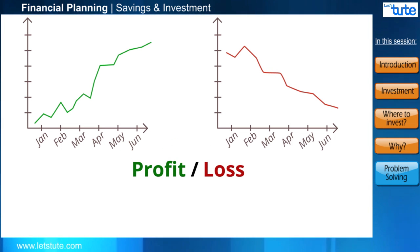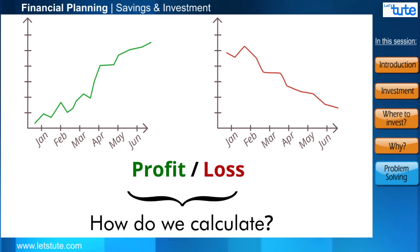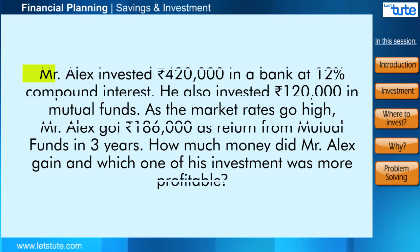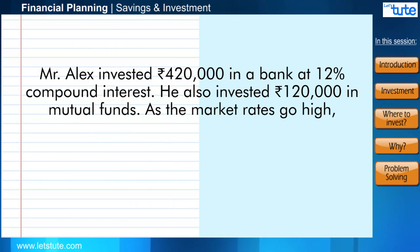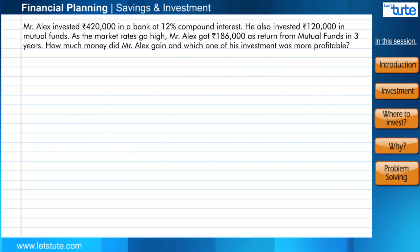On a regular basis, we should check how the investments are performing and whether we are getting the desired results or not. Now, how do we calculate that our investment is giving us a profit or not? Let's have a look at the situation and get the answer. Mr. Alex invested ₹420,000 in a bank at 12% compound interest. He also invested ₹120,000 in mutual funds. As the market rates go high, Mr. Alex got ₹186,000 as return from mutual funds in three years. How much money did Mr. Alex gain and which one of his investments was more profitable?